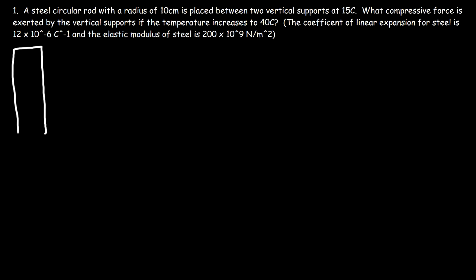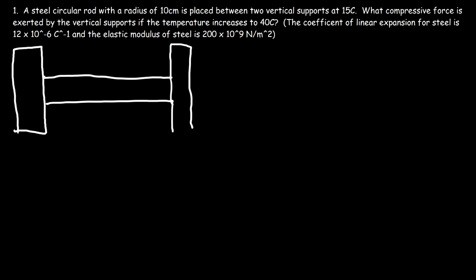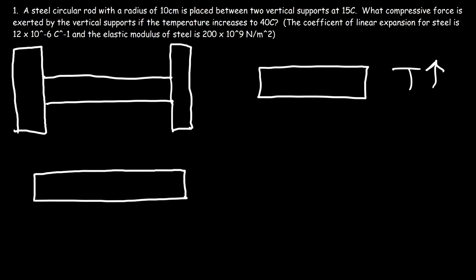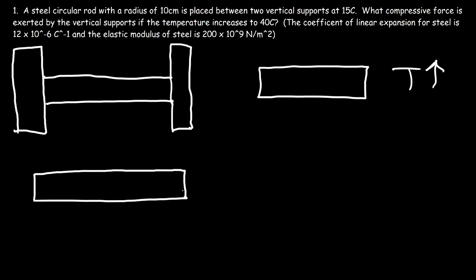So let's say that's the first vertical support, and this is a steel beam placed right between them, and here's the next vertical support. The vertical supports are fixed in place. Now, if the temperature increases, the rod is going to expand — it's going to get longer. Because it's fixed in place by these two vertical supports, those vertical supports will exert a force that will prevent the rod from expanding. So the vertical supports are under thermal stress.